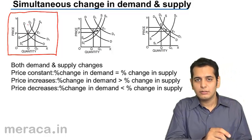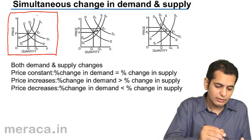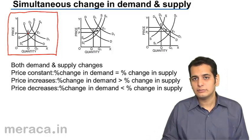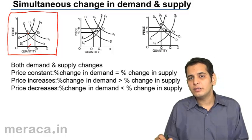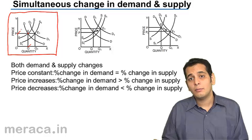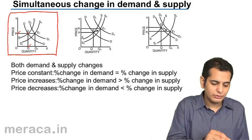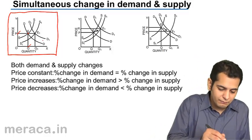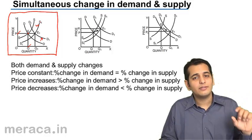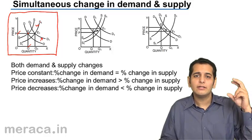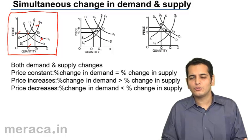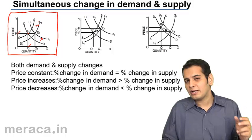In the original case, the DD curve cuts the SS curve at point E, where Q is the equilibrium quantity and P is the equilibrium price. Now, when both increase, demand increases and supply also increases — but in this case, demand and supply are increasing in the same proportion. Both are increasing by the same degree, the same fraction, the same proportion.